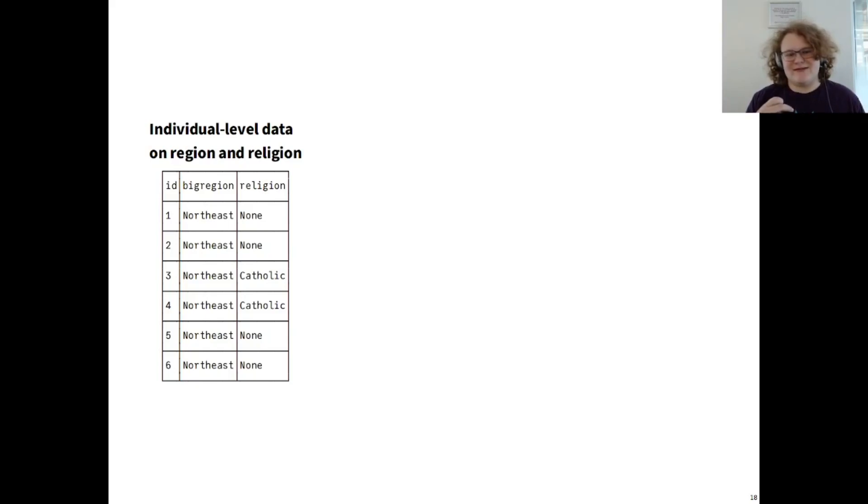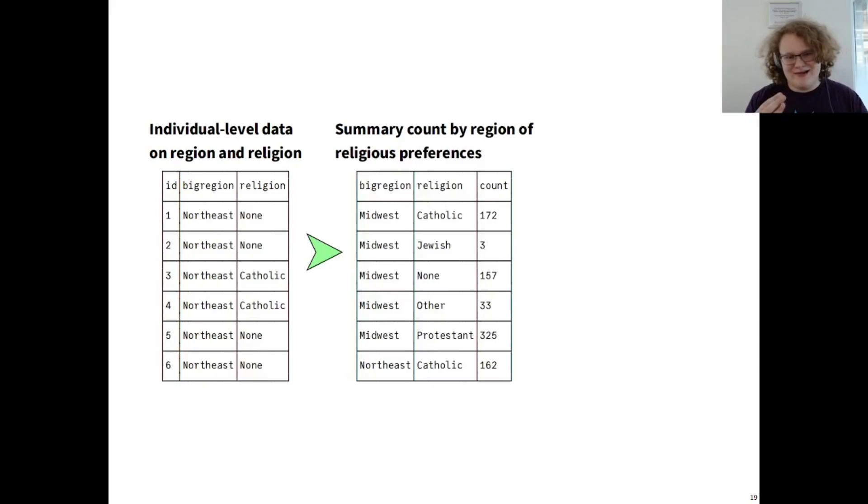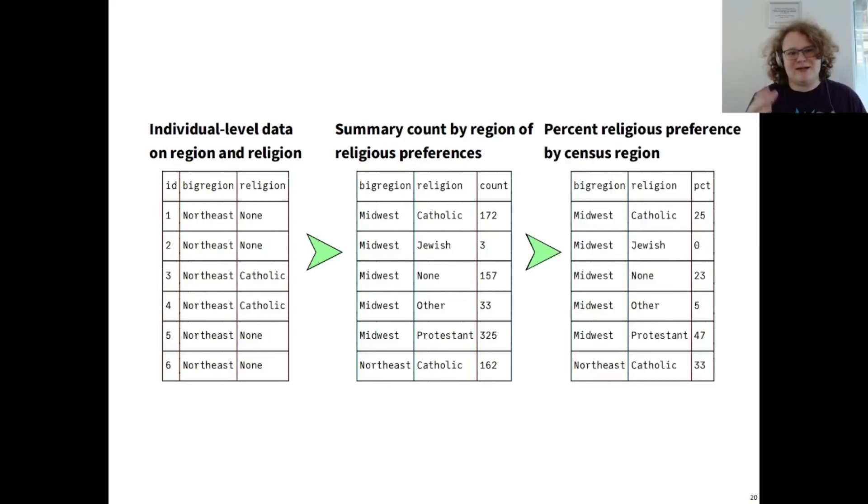This transformation would look something like this. We take our individual level data, so for example, we know somebody in the Northeast is Catholic, and then we summarize it down into a smaller table where we count the number of rows that have Midwest Catholics, the number of rows that had Midwest Jews, etc. Then, we would want to take this and convert it into percentages, so summing up all the people in the Midwest and dividing the results of the previous one by that. This would then give us the data frame we want, but we don't have any tools to do that, or do we?